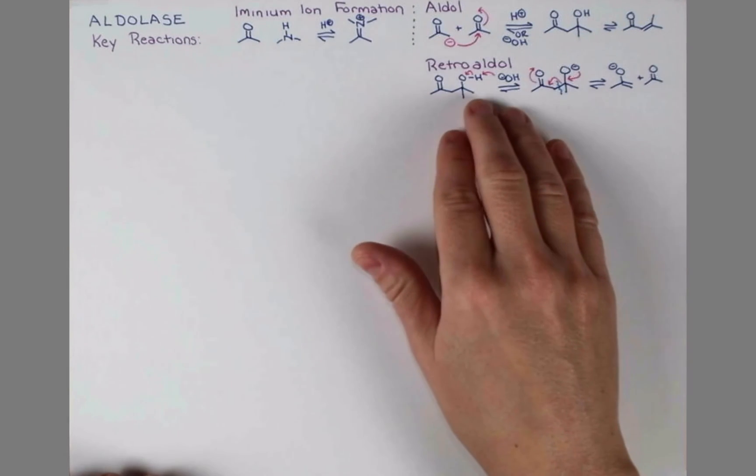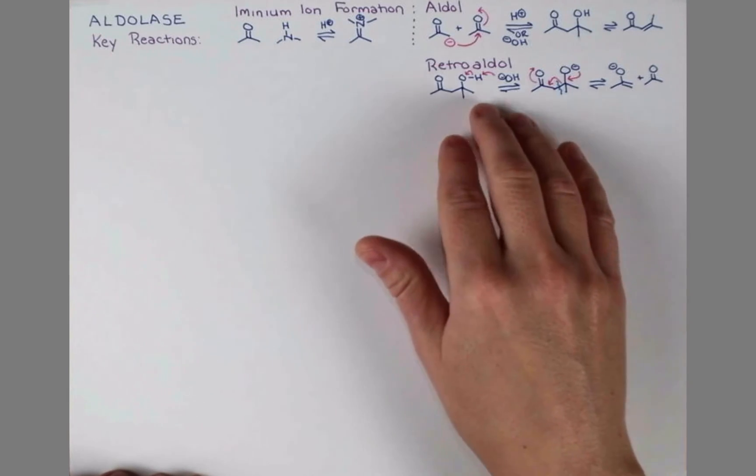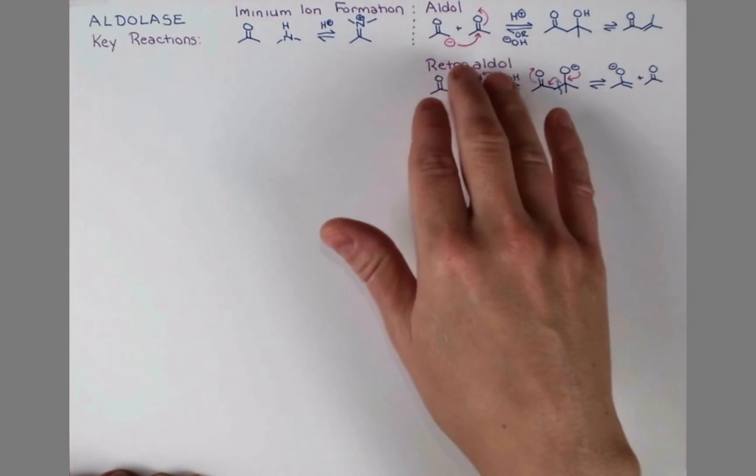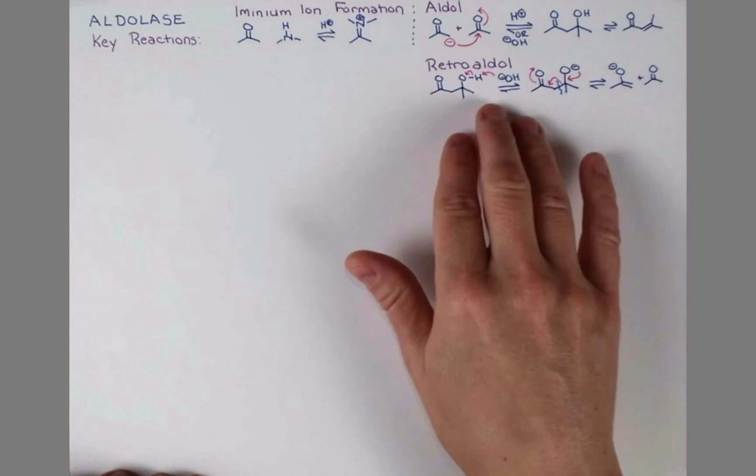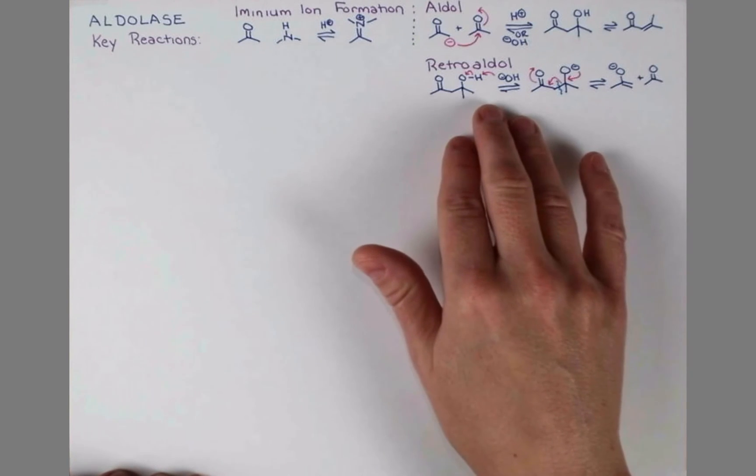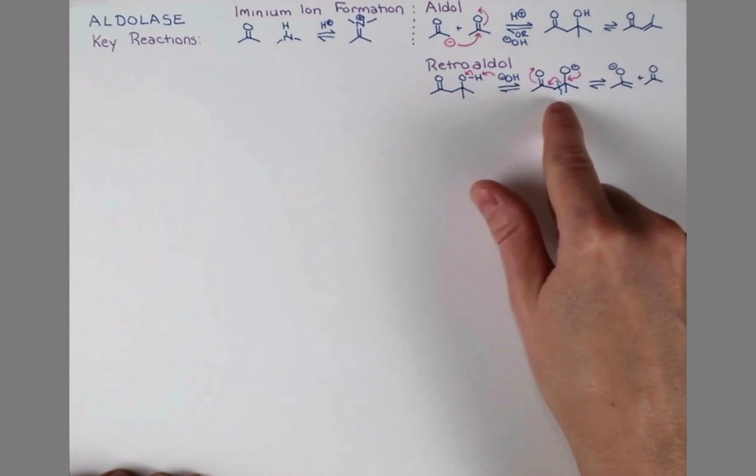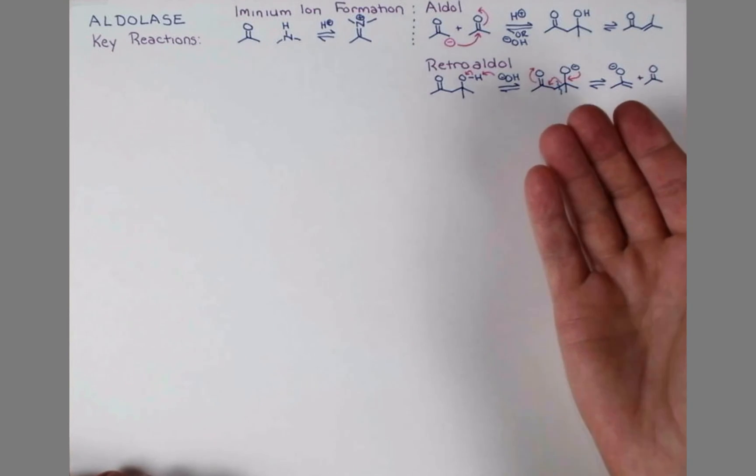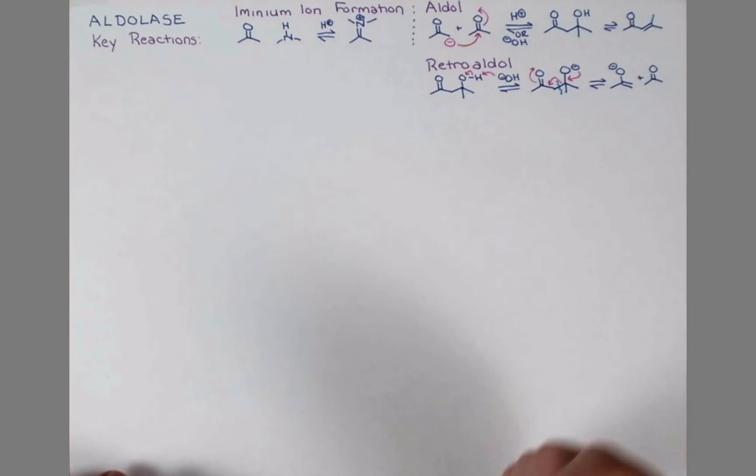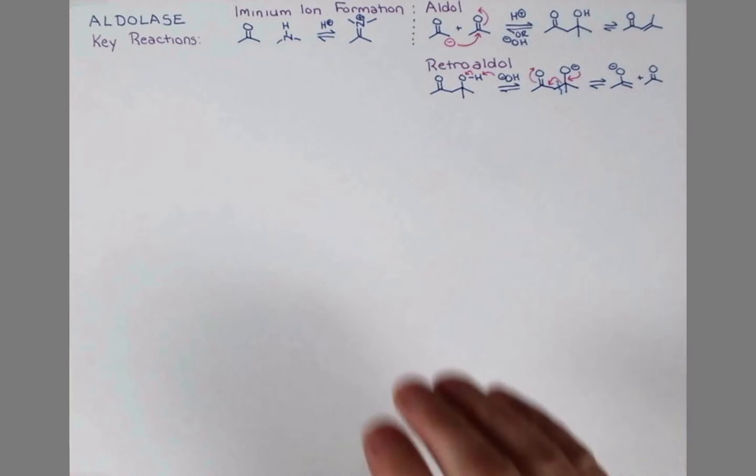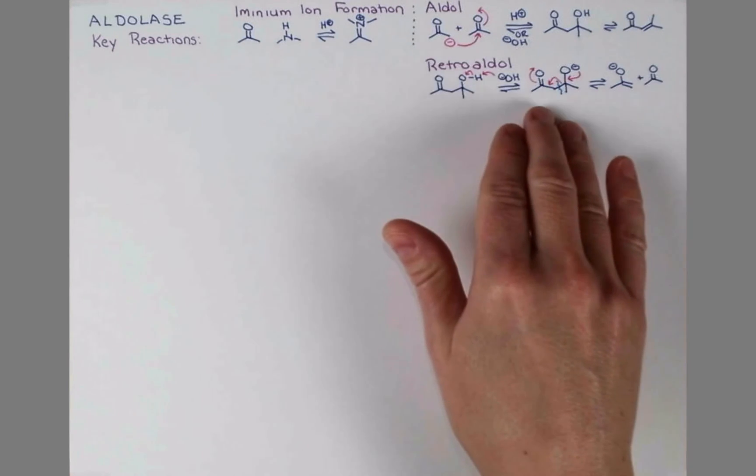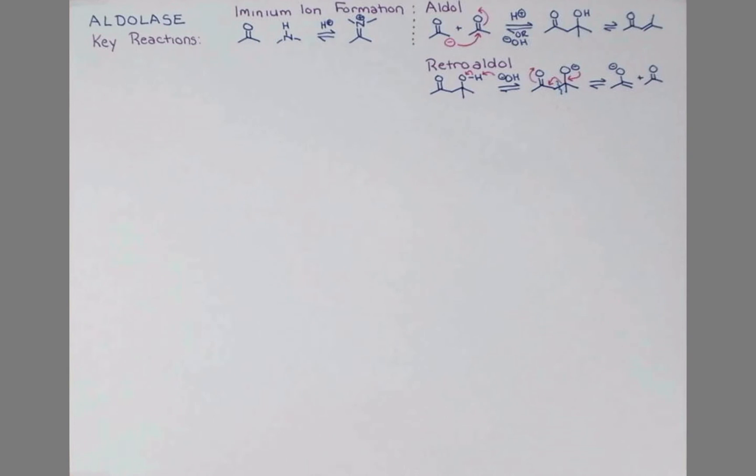You're probably less familiar with the retroaldol than the aldol reaction. The aldol reaction is quite common, but the retroaldol is pretty rare. It's actually really hard to cleave carbon-carbon bonds, even forming an enolate like this. But what if we were somehow able to combine these two reactions? Aldolase does just this, so let's take a look.